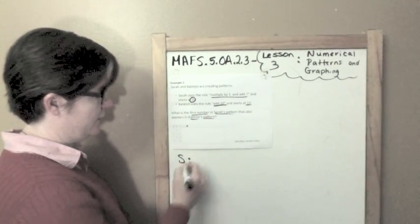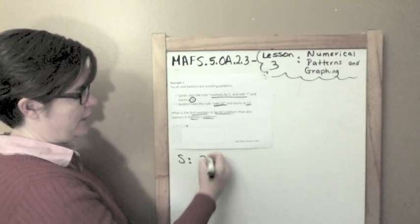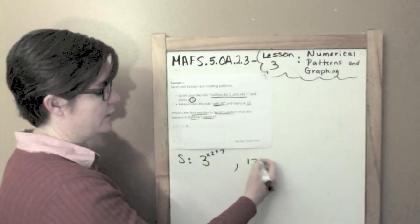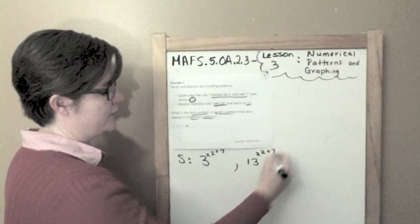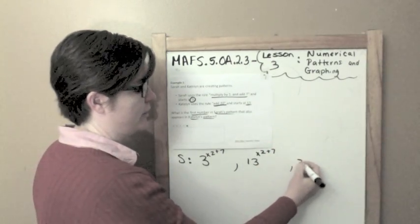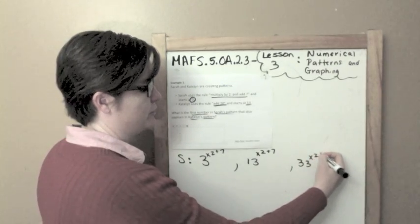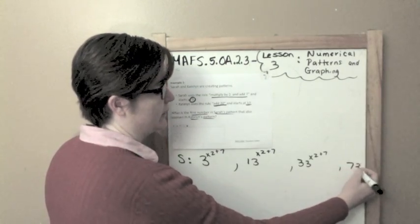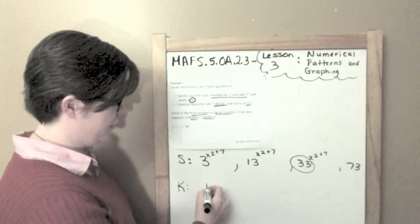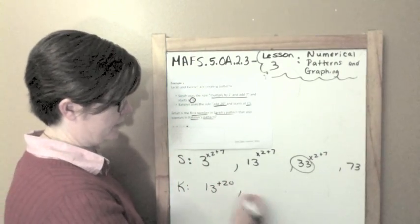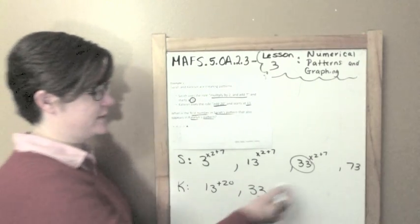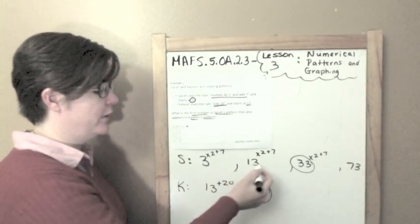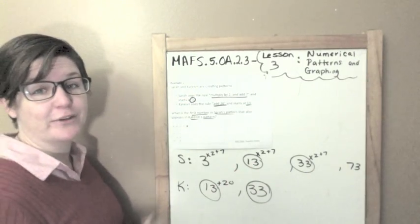Alright, so let me start with mine. I start at 3 and multiply by 2 and add 7. So 3 times 2 is 6 plus 7 is 13. Then 13 times 2 plus 7: 13 times 2 is 26 plus 7 is 33. Then 33 times 2 plus 7: 33 times 2 is 66 plus 7 is 73. Now let me check Caitlin's. Caitlin starts at 13 and adds 20, which would be 33. Now I'm noticing something — I see 33 and 33, but is that the first number that appears in both patterns? No.